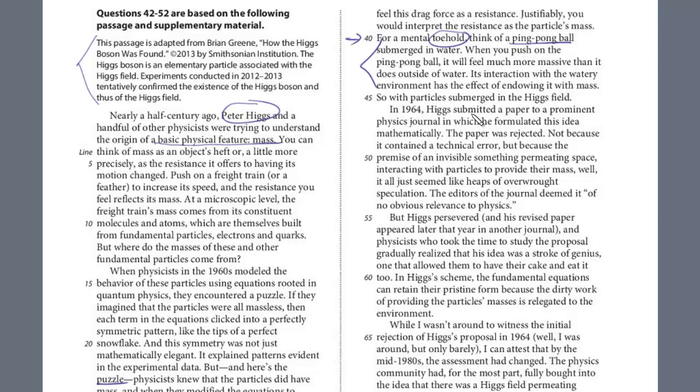And so let's take a look here. So it's explaining this was the ping pong ball. And look here, in 1964, Higgs submitted a paper to a prominent physics journal in which he formulated this idea mathematically. So he's presenting the idea here, keyword, it was rejected. Here's the reason, not because it contained a technical error, but because the premise of an invisible something permitting space interacting with particles to provide their mass. Well, it all seemed like heaps of overwrought speculation. So that's the reason. It's definitely here between, let's see, 46 and 52.